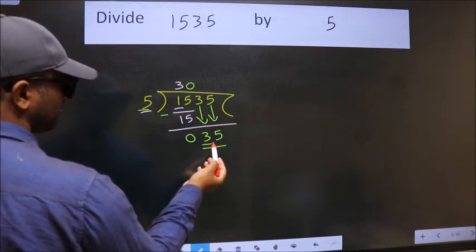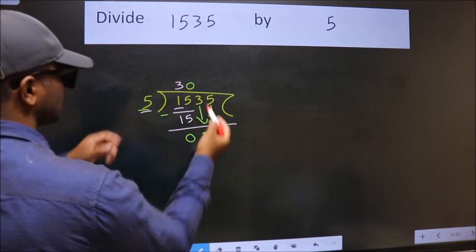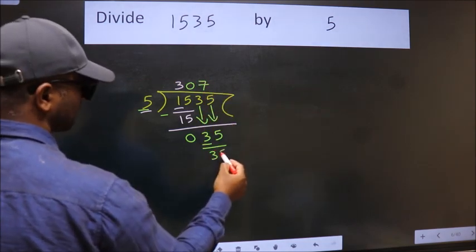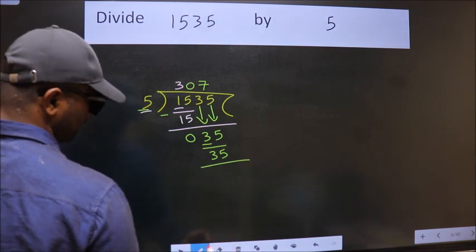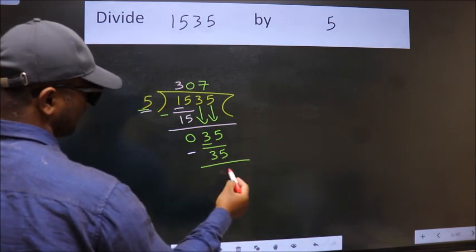When do we get 35 in the 5 table? 5 times 7 is 35. Now we subtract. We get 0.